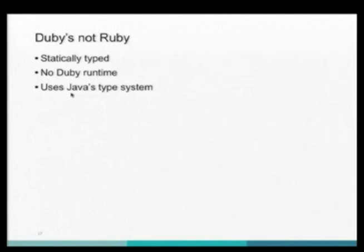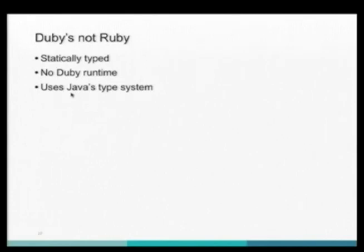So Doobie is not Ruby. One of the things a lot of people ask at first is: can I use Rails? Can I use Sinatra? You can't. Eventually we can write things that work just like Rails and Sinatra for Doobie, but right now there's not much. Doobie is statically typed, so your Ruby code obviously doesn't have that. It's also using the Java type system instead of Ruby's type system, so you have packages and classes are inside a package instead of having this one namespace.